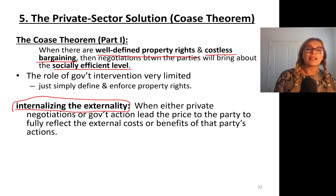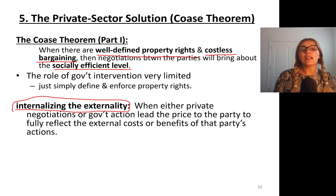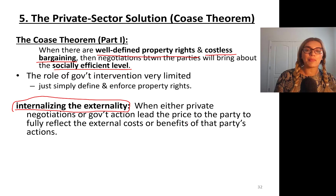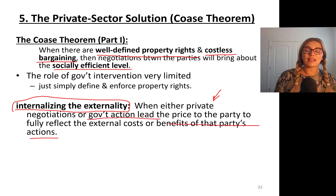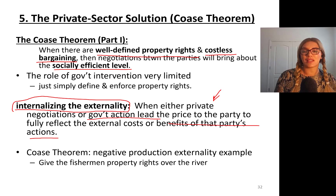What does internalizing the externality mean? When either private negotiations or government action lead the price to fully reflect the external costs and benefits of that party's actions. So basically, either it's Coase theorem or government actually imposing taxes and subsidies to correct the price and ensure that the production level matches the socially optimal level.